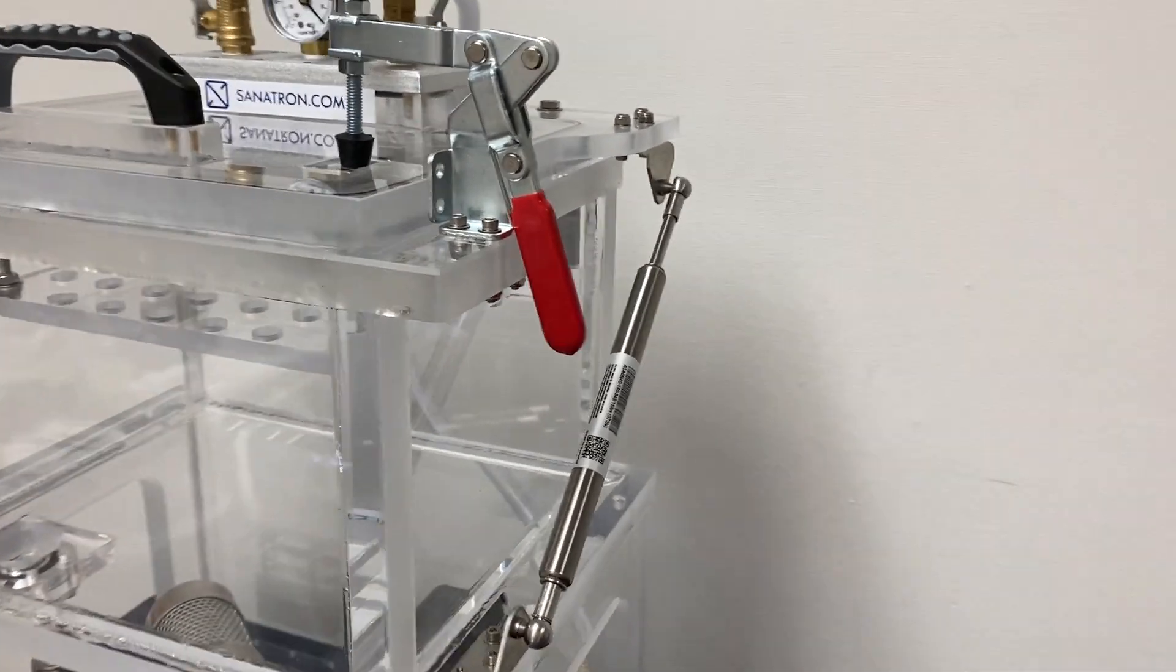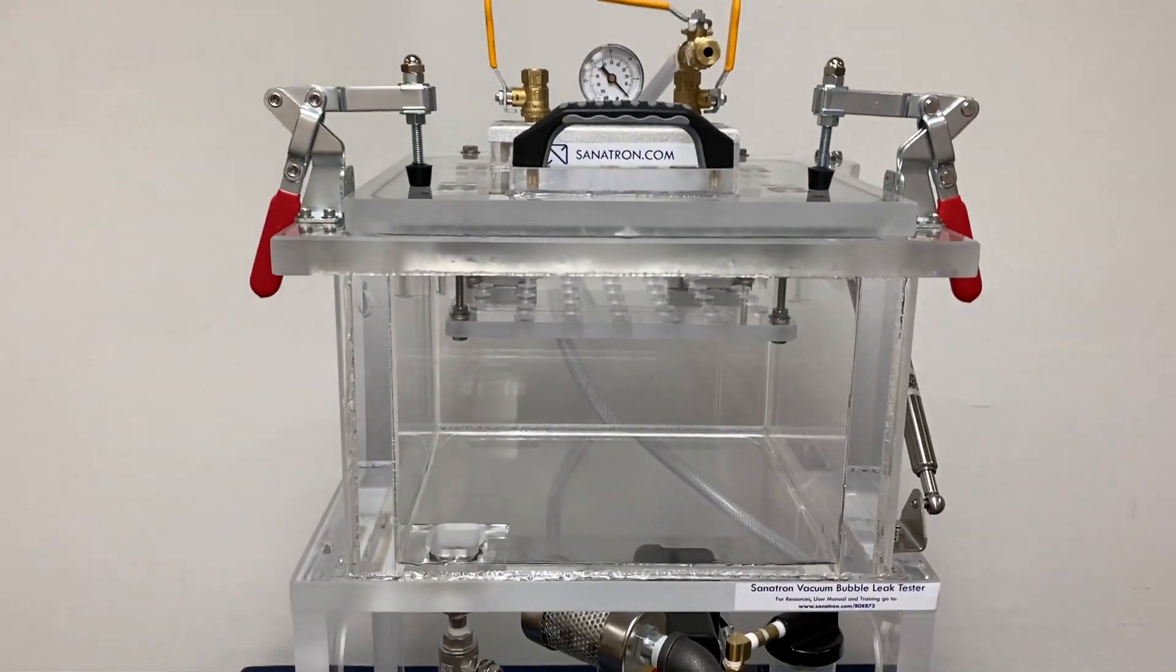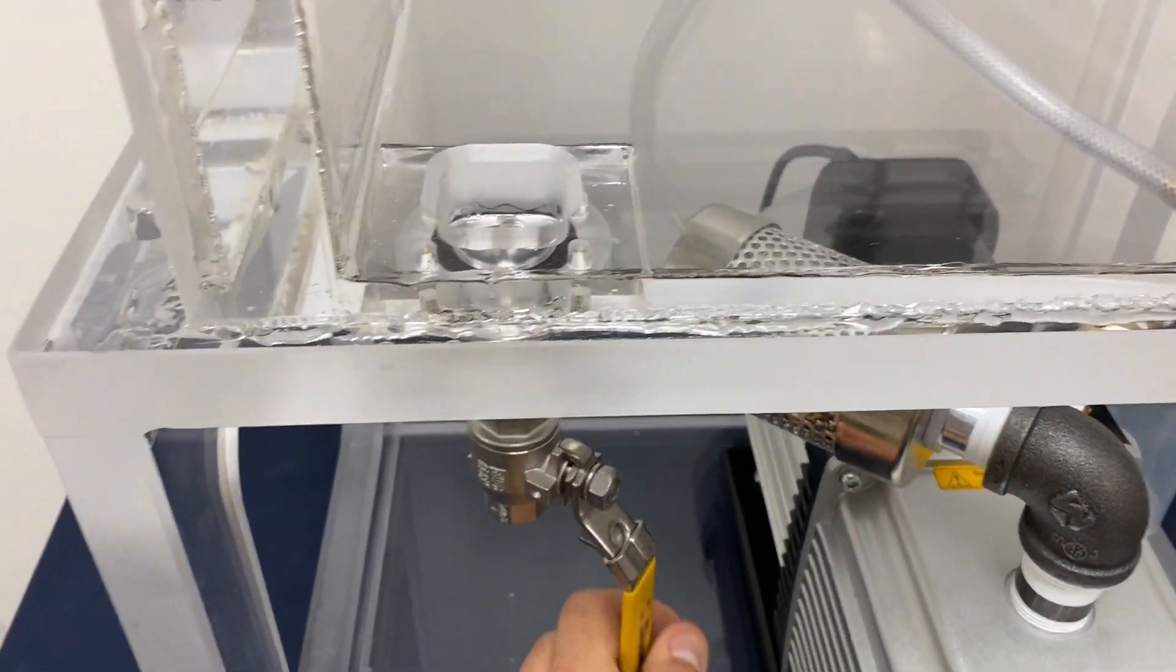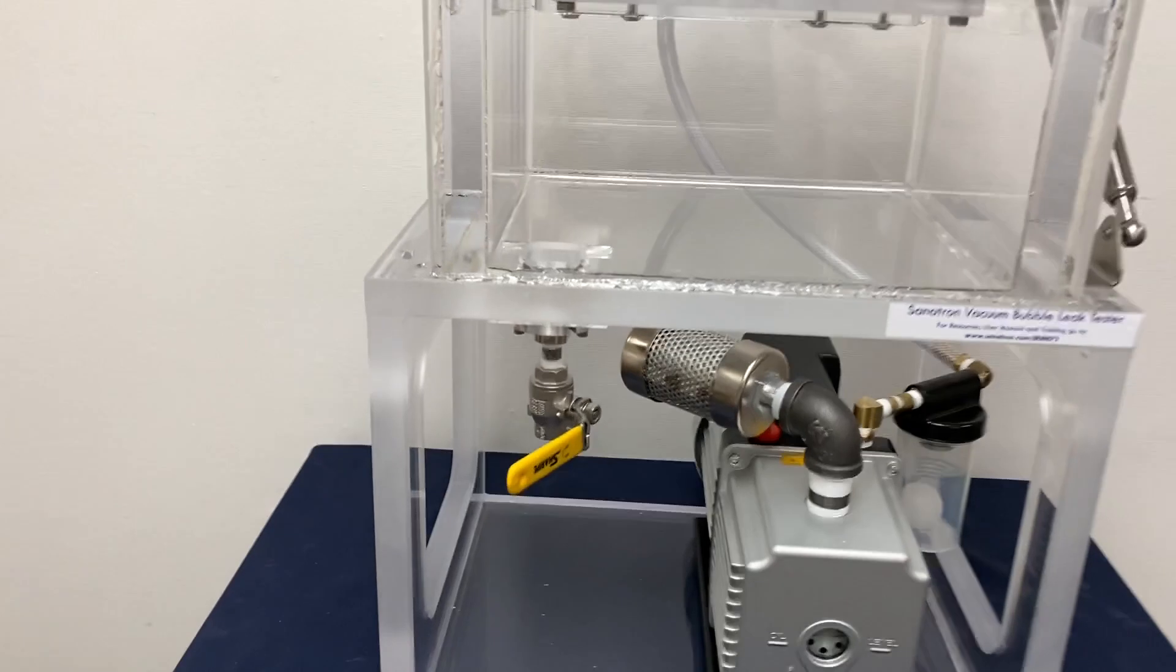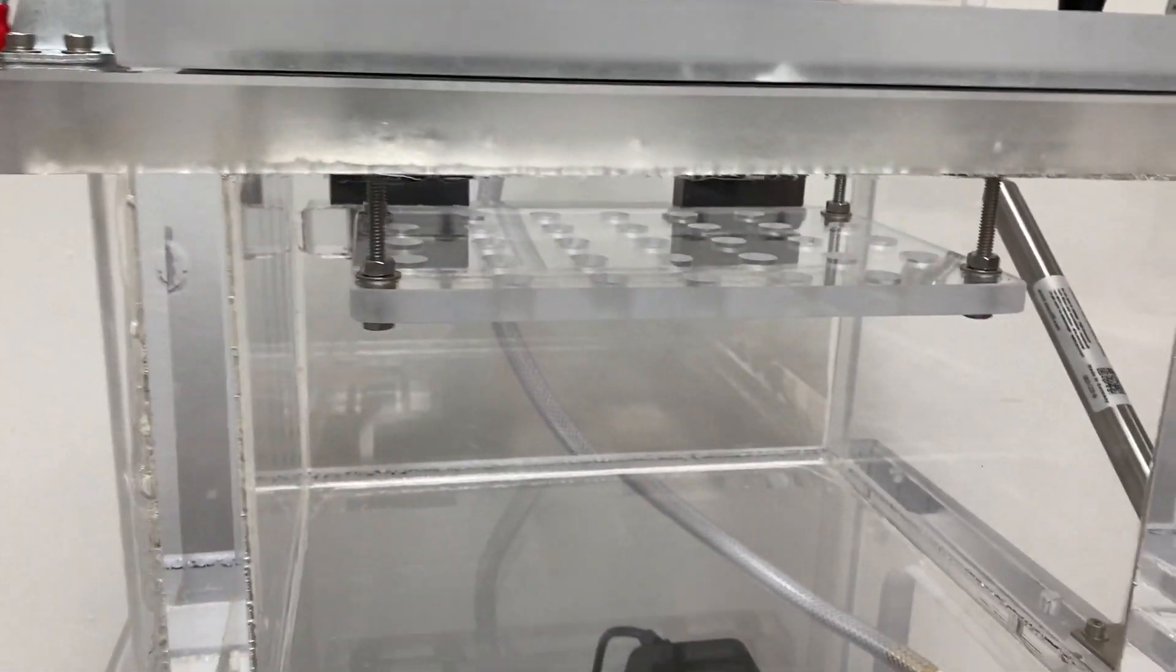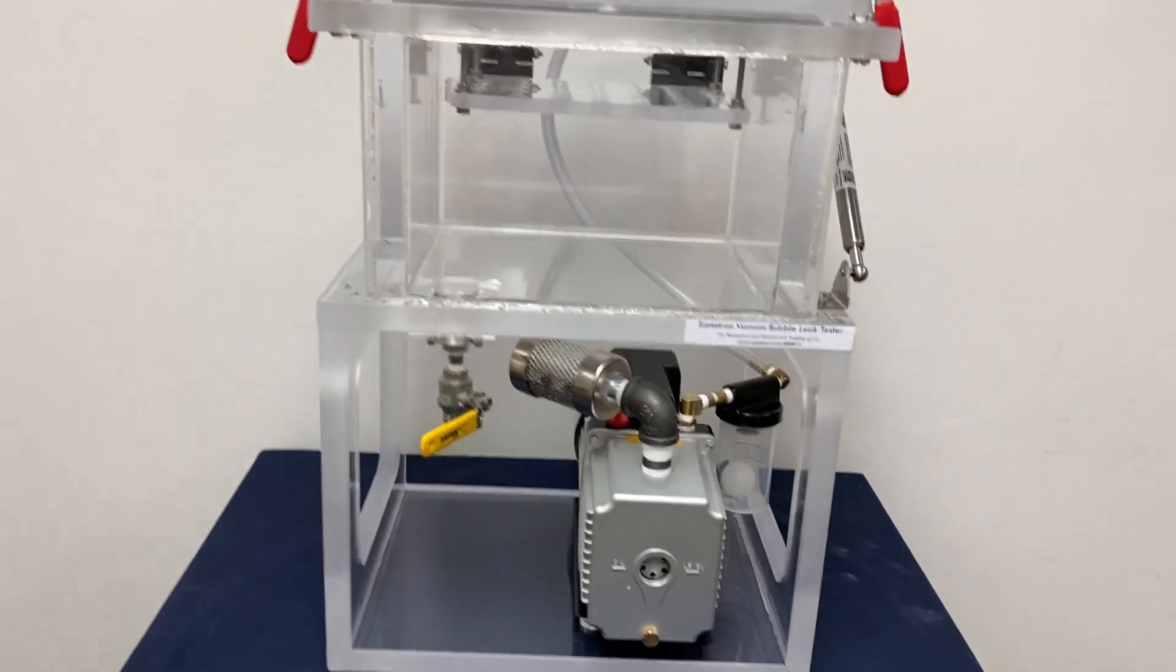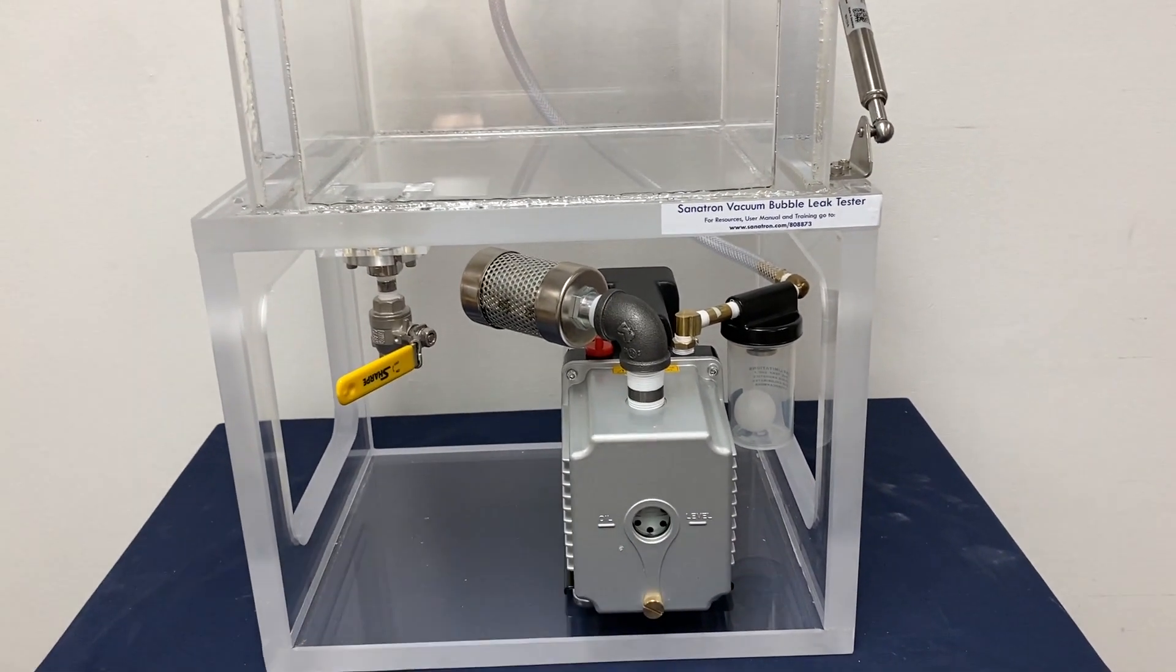Here we have a drain valve. This valve will drain the water that you fill into this chamber when you're done with it. Furthermore, this particular system comes with a rotary vane vacuum pump rated to about 15 micron.